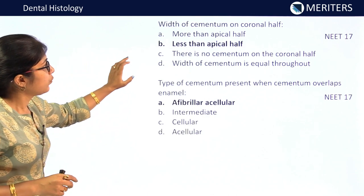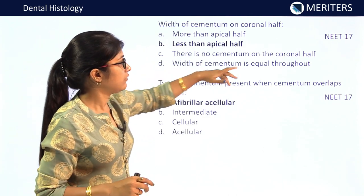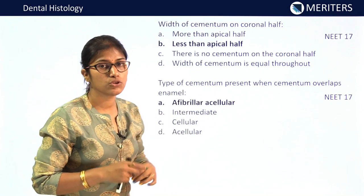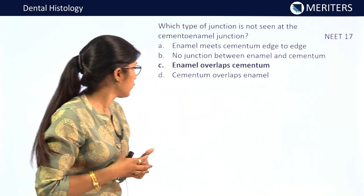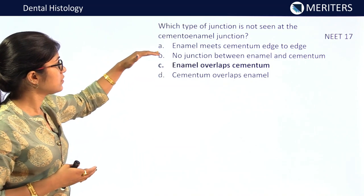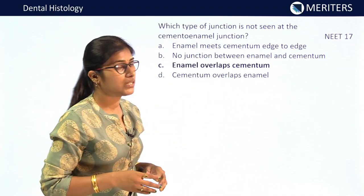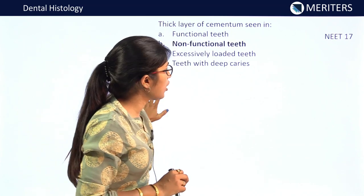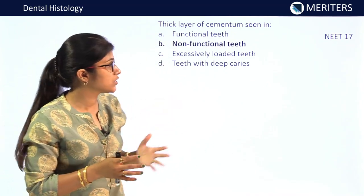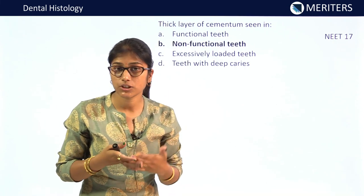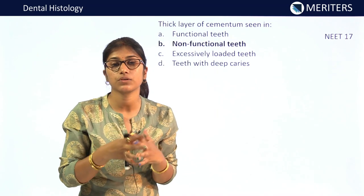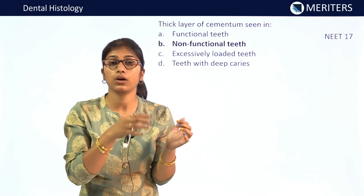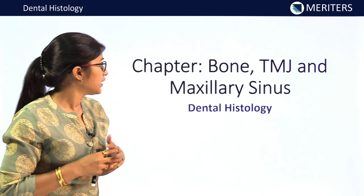For cementum: width of cementum on coronal half is less than apical half — NEET 2017. Type of cementum present when cementum overlaps enamel is acellular cementum — NEET 2017. You should be thorough with types of cementum and their locations. Which type of junction is not seen at the CEJ? Enamel overlapping cementum — NEET 2017. Thick layer of cementum seen in non-functional teeth — NEET 2017. Know the structure, CEJ contact, and types of cementum with locations.